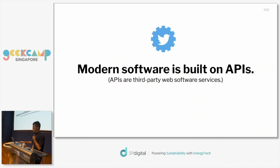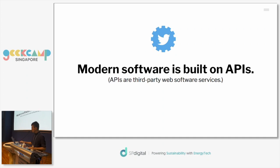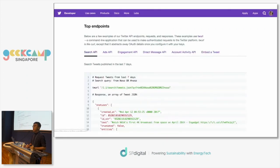I'm going to start with a story. Modern software is built on APIs. What are APIs? APIs are third-party services and software — things like the Twitter API or the Facebook API. These are services that let you consume other people's code by making network calls via the internet. For example, with the Twitter API you can search tweets and access content and users on the Twitter platform.